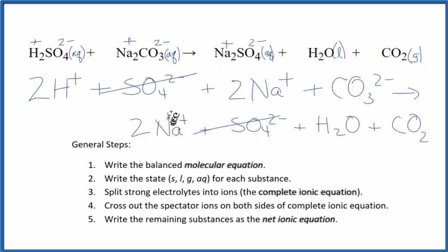I have two sodium ions here and two here. Cross those out. Everything else is unique, and that gives us our net ionic equation.